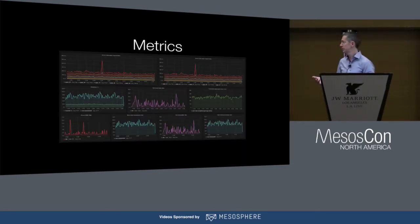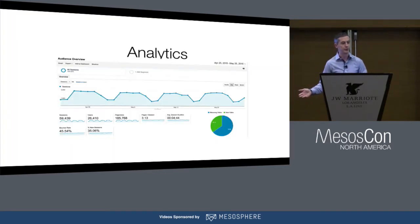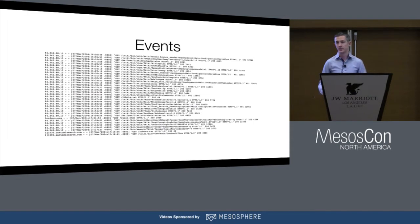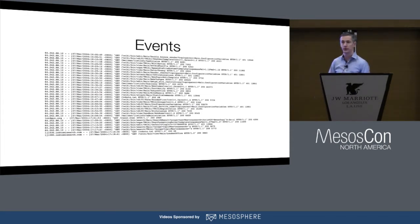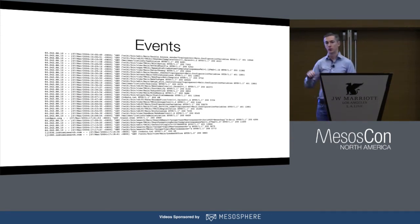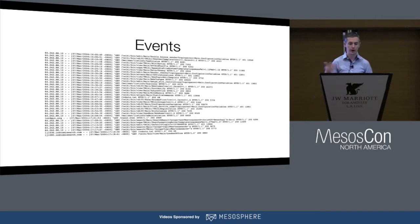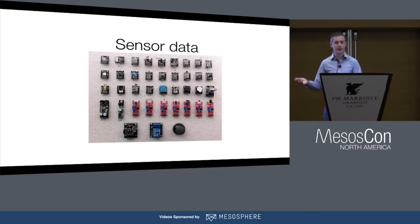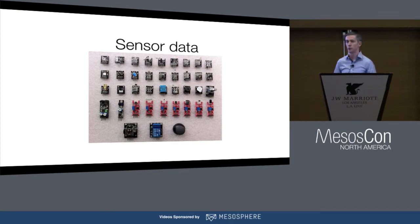We also think about metrics — server metrics, server monitoring, application performance monitoring, user analytics, events. This is a log from Apache. When I see this, I see a bunch of different time series: 200 requests over time, requests to a specific page, 404s or errors. And finally, sensor data — physical sensors out there in the world, the IoT use case.